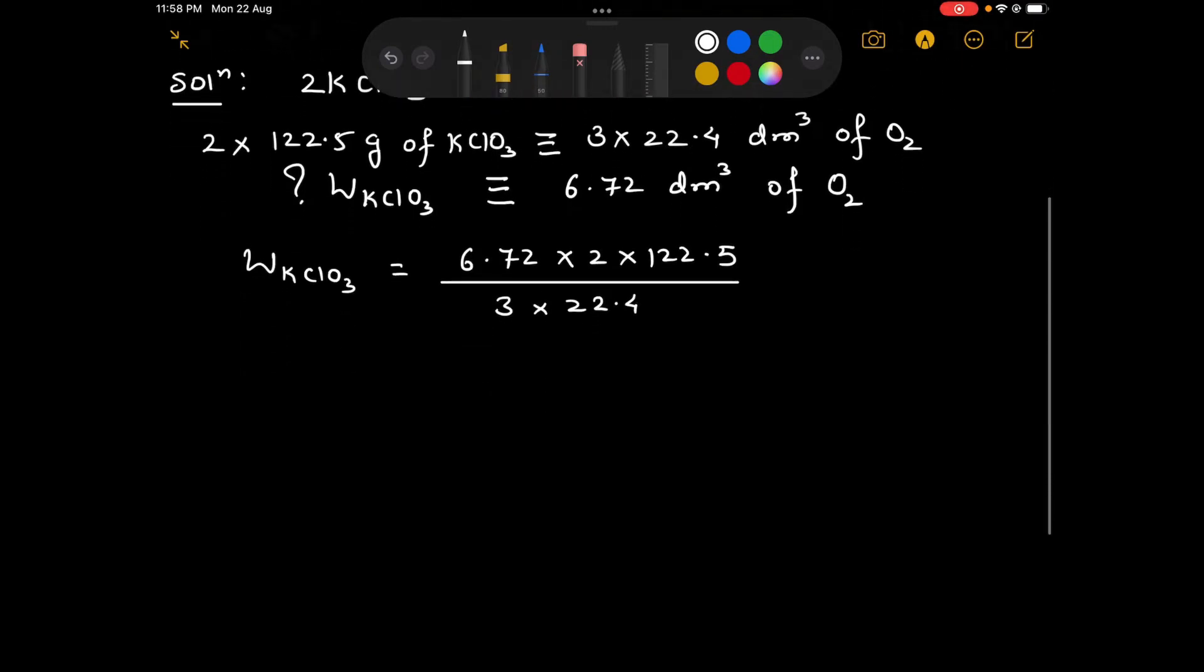Let us use log. Anti log of, since there is a multiplication sign between these three, we are going to add the logs. Before the decimal we are having only 1 digit, so the characteristic is 0. Since it is only 1 digit, the characteristic is 0 again.